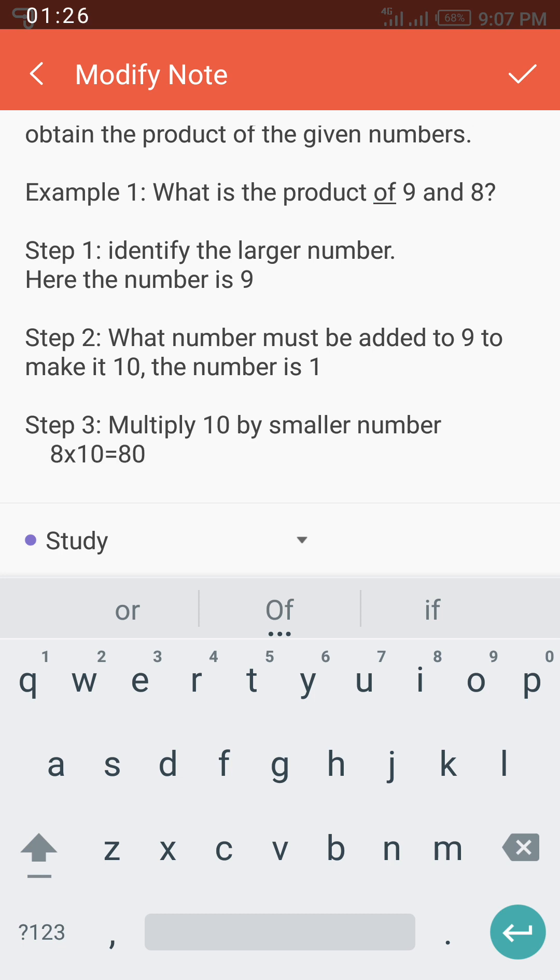Step 2: You will look for a number that should be added to 9 to make it 10, and that number is 1. You must take note of that number. Now since you've added 1 to 9 to make it 10, the 9 is no longer useful. What you are making use of now is the 10.